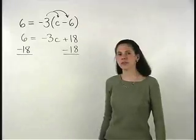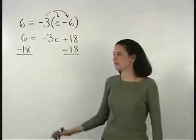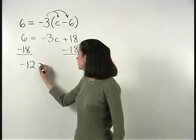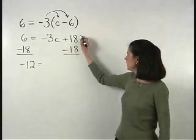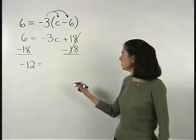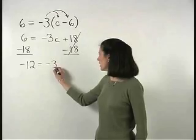On the left, 6 minus 18 is negative 12. And on the right, the 18 and minus 18 cancel and we're left with negative 3c.